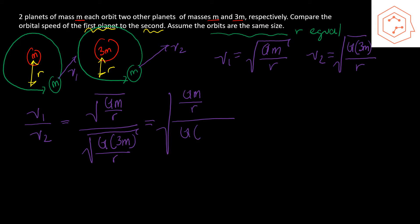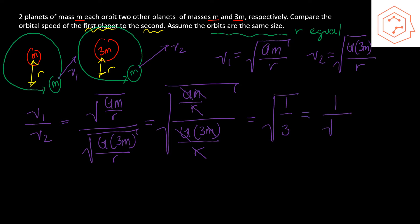The M, G, and r all cancel, leaving us with √(1/3), or 1/√3. This means √3 · v1 = v2, so v1 is smaller than v2. This makes sense because v1 is orbiting a smaller mass while v2 is orbiting a bigger mass at the same radius, so v2 must be the greater speed.